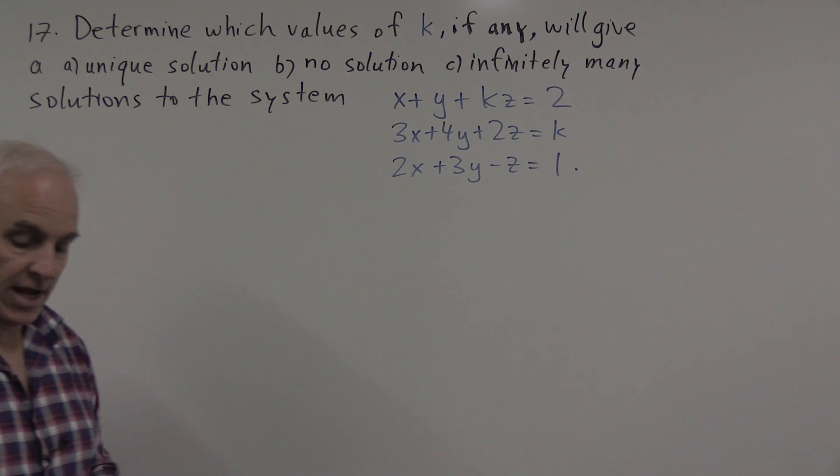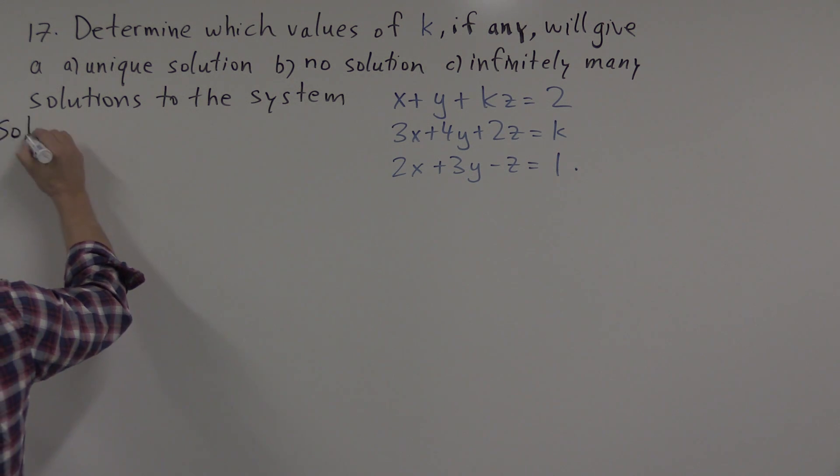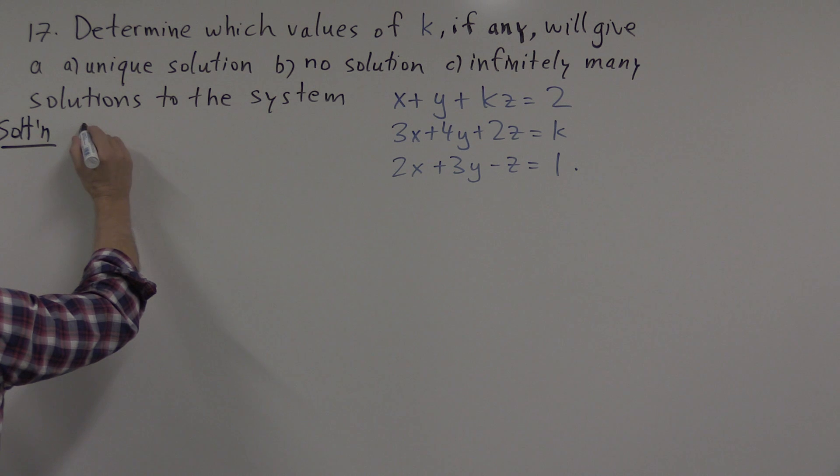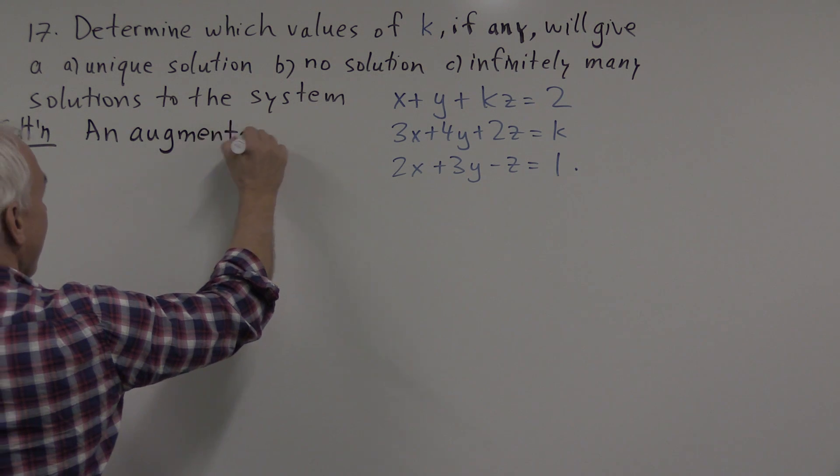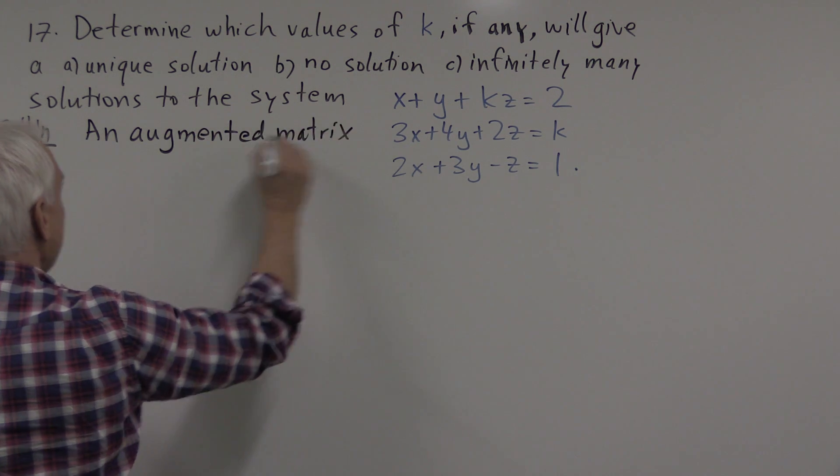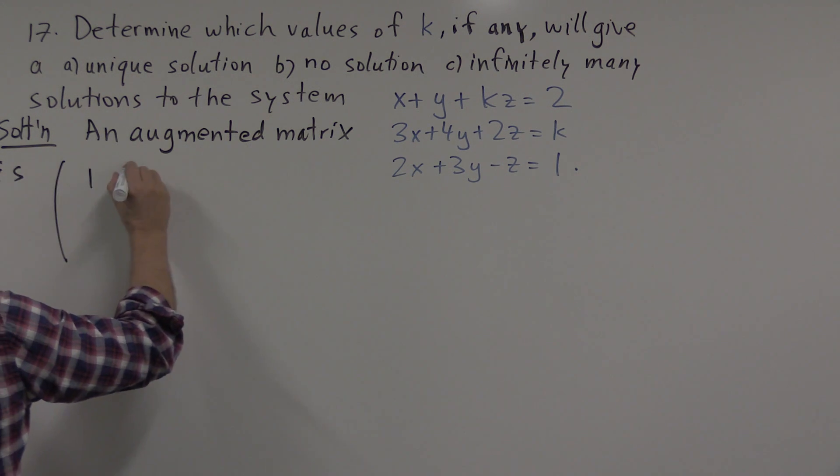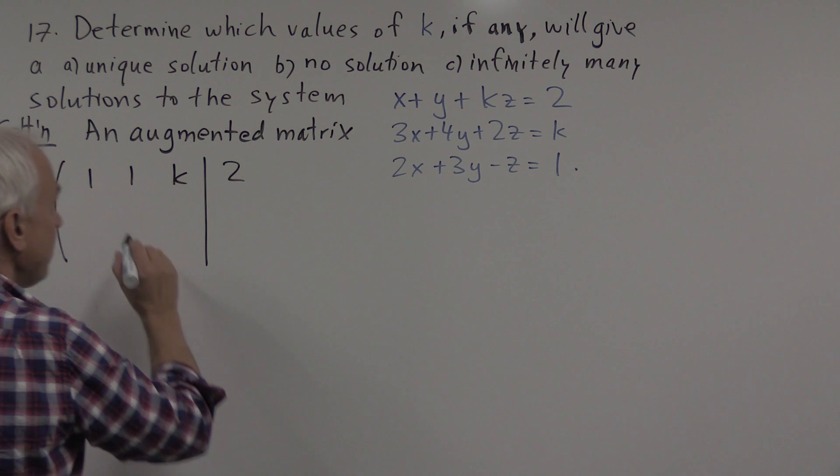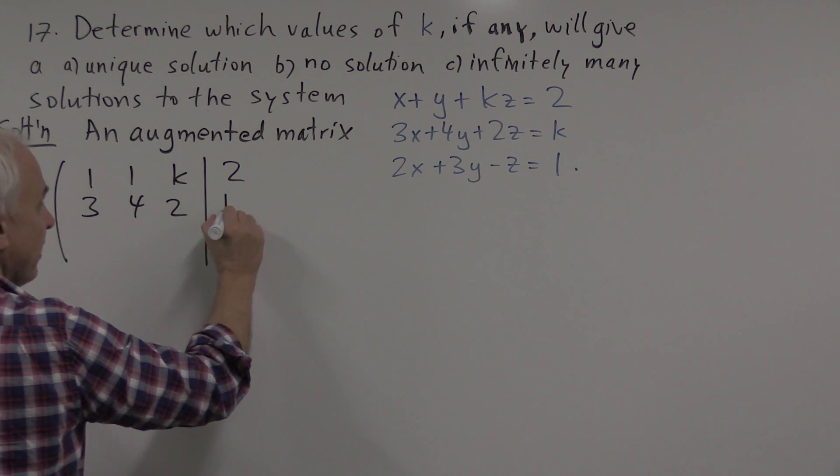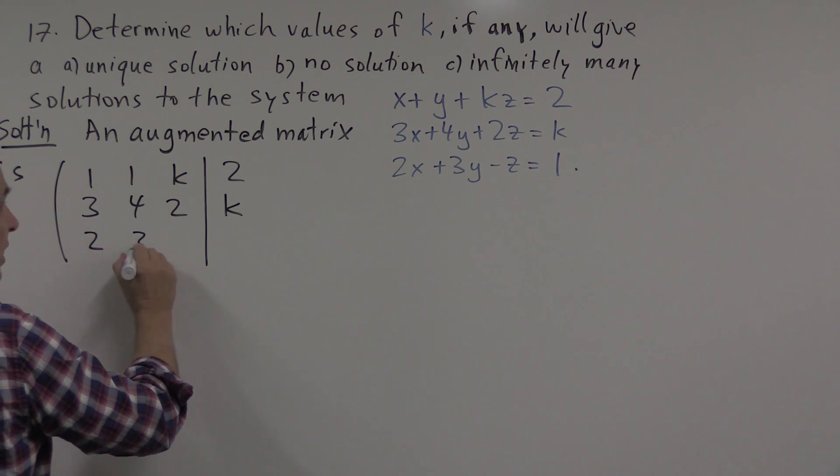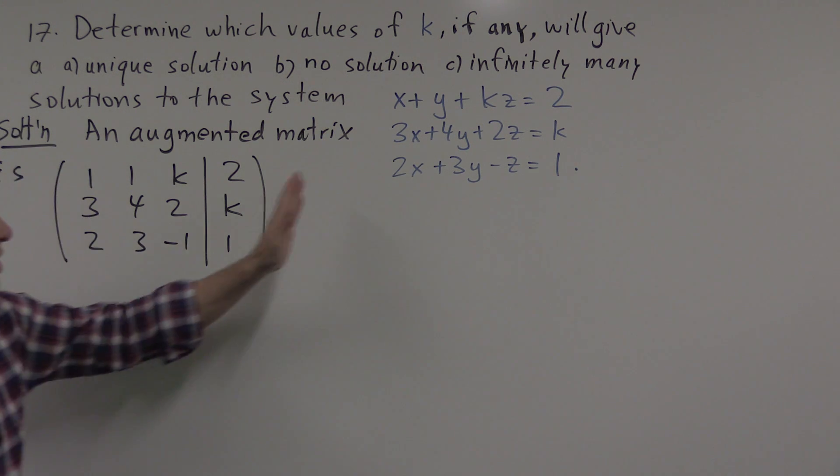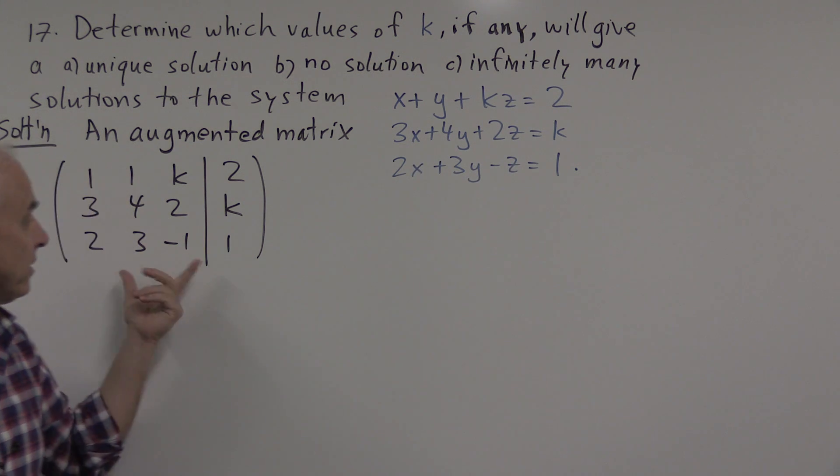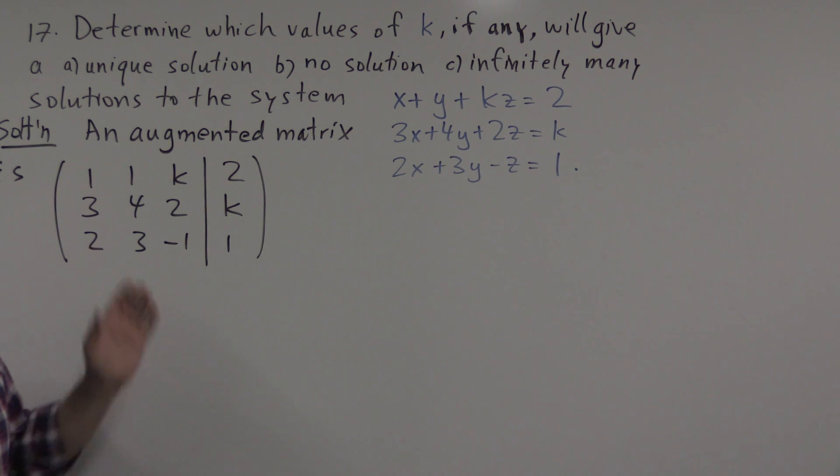We're going to proceed just as we usually do. Our solution starts with writing down an augmented matrix. The augmented matrix is 1, 1, k, and 2 for the first equation; 3, 4, 2, and k for the second equation; and 2, 3, minus 1, 1 represents the third equation. We've just written down the coefficients of the x, y, and z on the left-hand side, the coefficient part of the matrix, and the right-hand side 2, k, 1 on the right-hand side there.